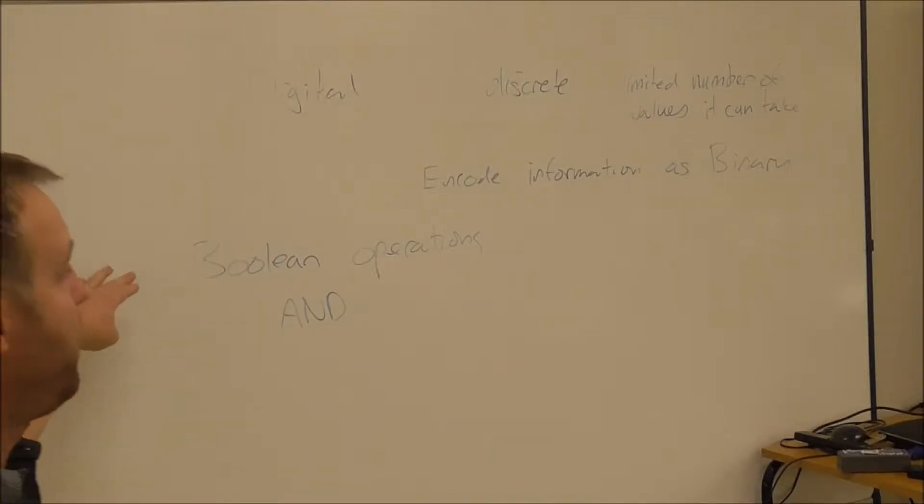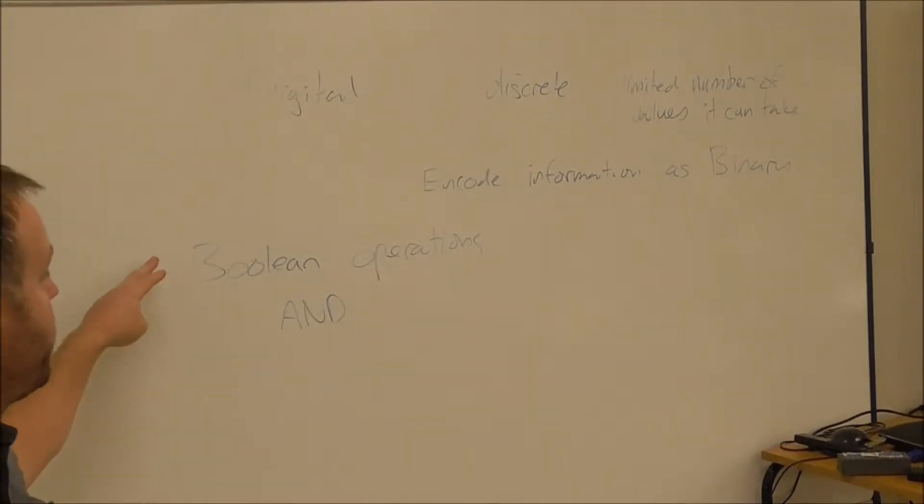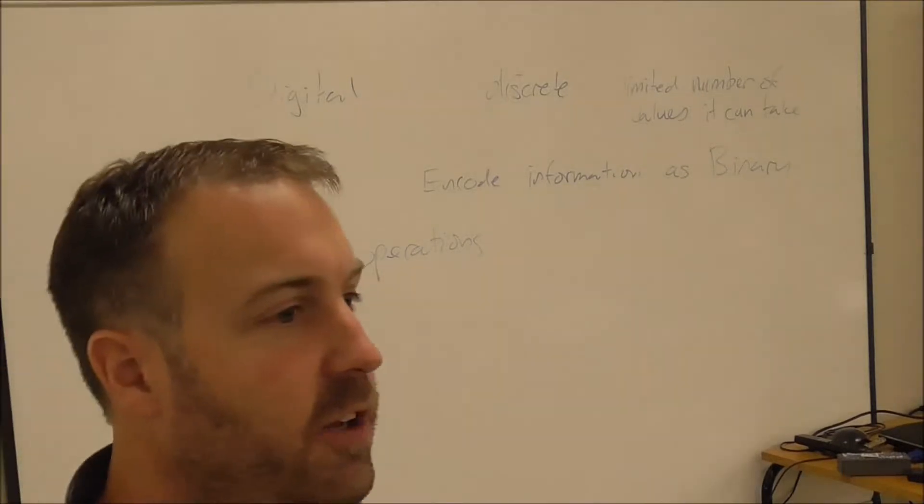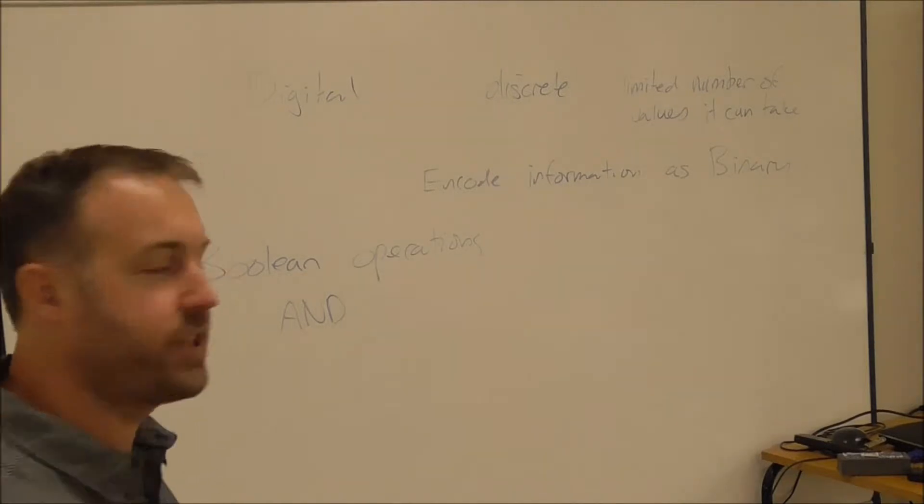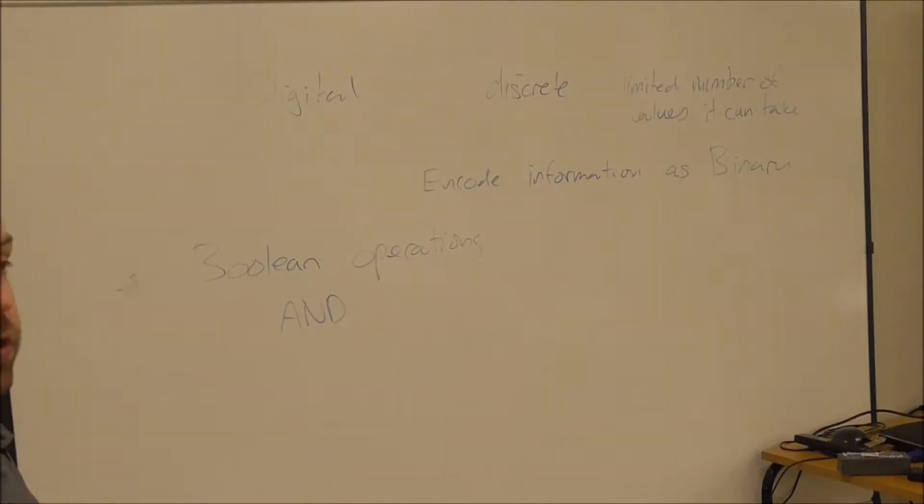We've got Boolean operations which do something with our digital signal. In this case there are seven different operations but really only four, and the other three are related to three of the others. The first one is an AND operation and the best way to show you how these things actually behave is by something called a truth table.